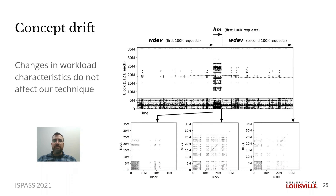Lastly, I want to point out an advantage of our online approach over some offline techniques. Data access patterns may change over time as different applications take dominance of the storage system, resulting in a change or drift in concept. Since our online analysis has a memory limit, it is capable of forgetting old patterns and adapting to newer patterns over time. Here, I replayed 100,000 requests from WDEV and recorded the frequent correlations. Then I replayed 100,000 requests from a different trace, HM. This represents a temporary drift in concept. Afterwards, the workload returns to the previous concept. Notice how the correlations shift to the temporary drift, but then back towards the original pattern. Since the synopsis table has limited memory, it remembers only the most recent concept, favoring temporal locality. This allows it to adapt dynamically to changes in data access patterns. An offline technique would contain a mixture of the two patterns.